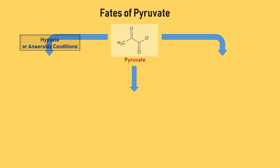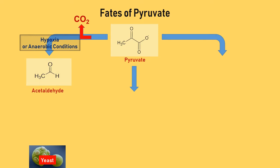Firstly, in a low oxygen state — hypoxia — or anaerobic respiration, if it is handled by a yeast cell, pyruvate initially converts into acetaldehyde by releasing carbon dioxide, and eventually is reduced to ethanol by accepting protons from reduced NADH. This is called alcoholic fermentation.